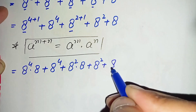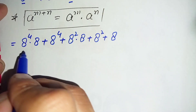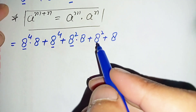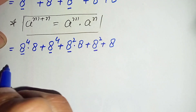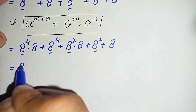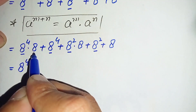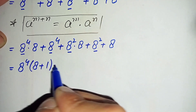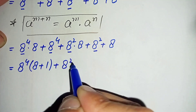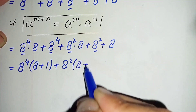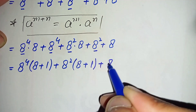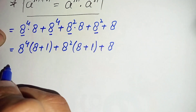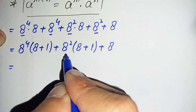Now we take 8 raised to power 4 common from the first two terms, and 8 raised to power 2 common from the next two terms. Taking 8 raised to power 4 common leaves (8+1), and taking 8 raised to power 2 common also leaves (8+1), plus 8. Since 8+1 = 9, we factor out 9.